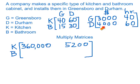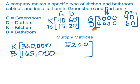The second row times the first column is 15 × $3,000 + 30 × $4,000, which equals $165,000. The second row times the second column is 15 × 40 + 30 × 60, which equals 2,400. The column labels of the resulting matrix are dollars and hours.